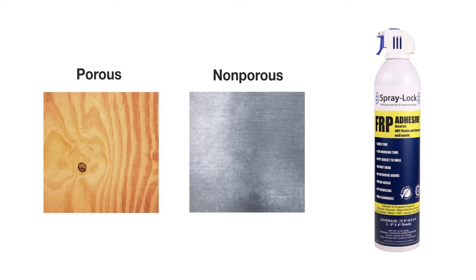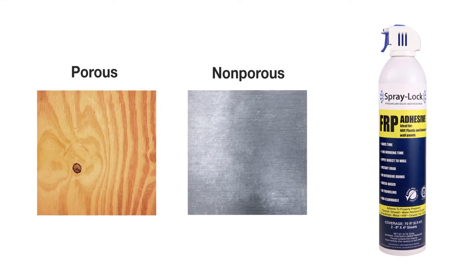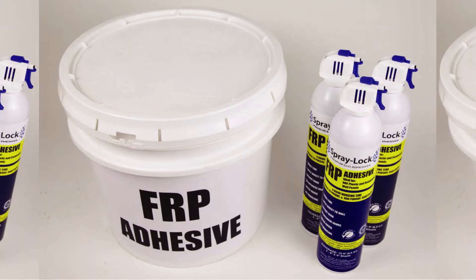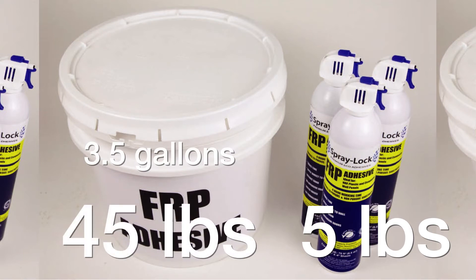Spraylock is one of the only adhesives that allows installation over porous and non-porous substrates. Spraylock conserves materials to do the same job. Three cans weighing a total of 5 pounds provides the same coverage as a 3.5-gallon, 45-pound bucket of traditional adhesive.